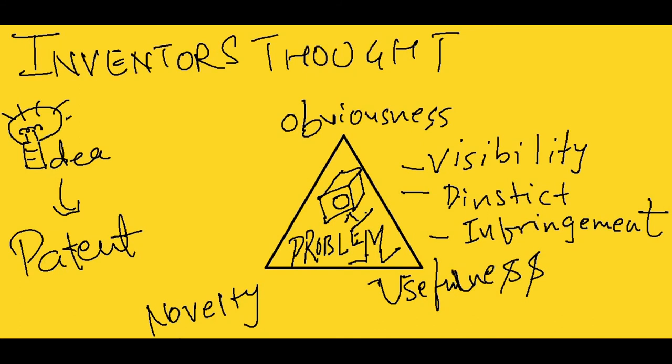Idea must target or intend to solve a problem. To be a better product idea, it must be visible in the market. Handle obviousness problem for making a product distinct from the others, so that infringement does not take place.